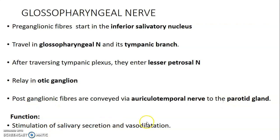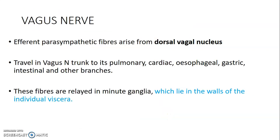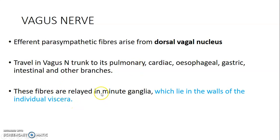Now we go to the tenth cranial nerve, which is the vagus nerve. The parasympathetic nucleus of origin is the dorsal vagal nucleus — that's where the efferents arise from. These fibers travel through the vagus nerve to its pulmonary, cardiac, esophageal, gastric, intestinal, and other branches. These fibers are relayed on very small ganglia which usually lie on the walls of the viscera.